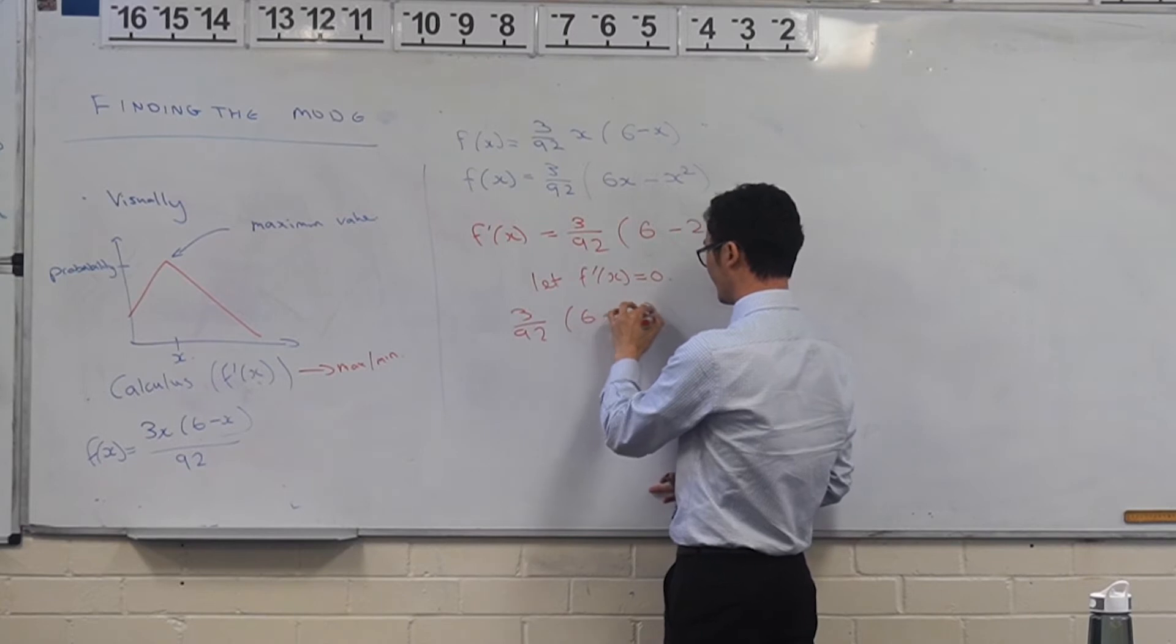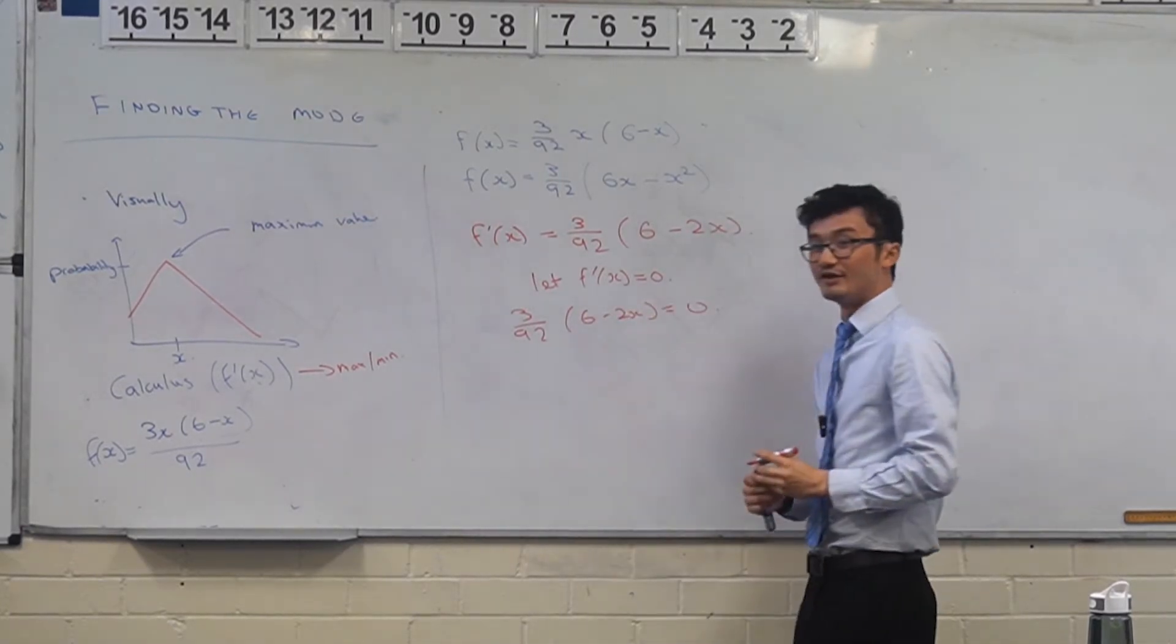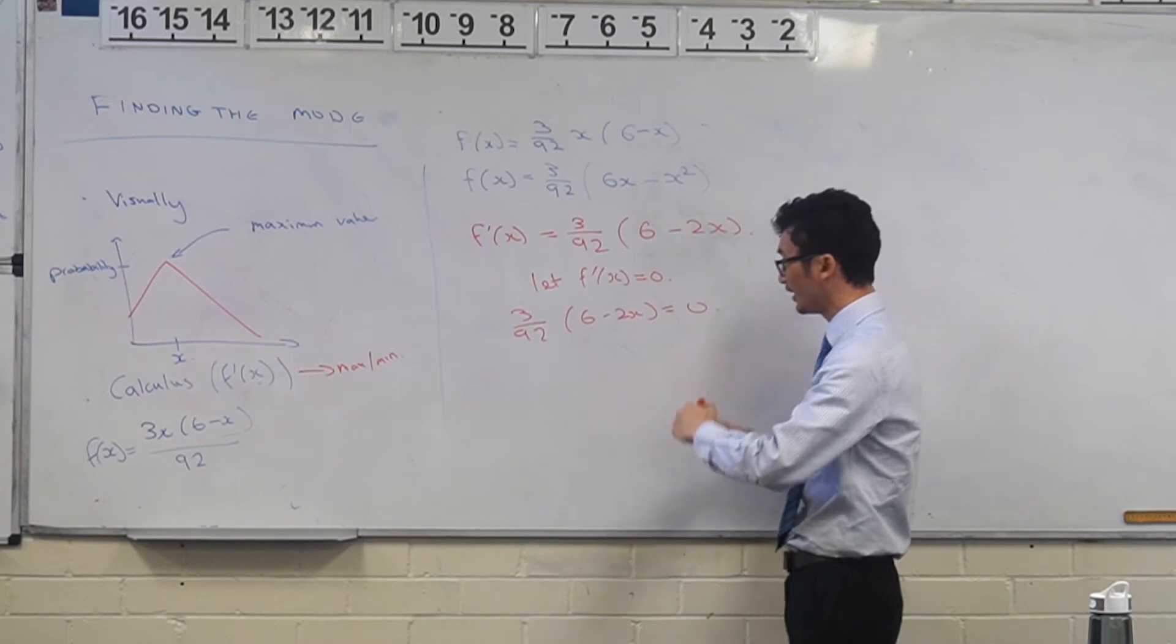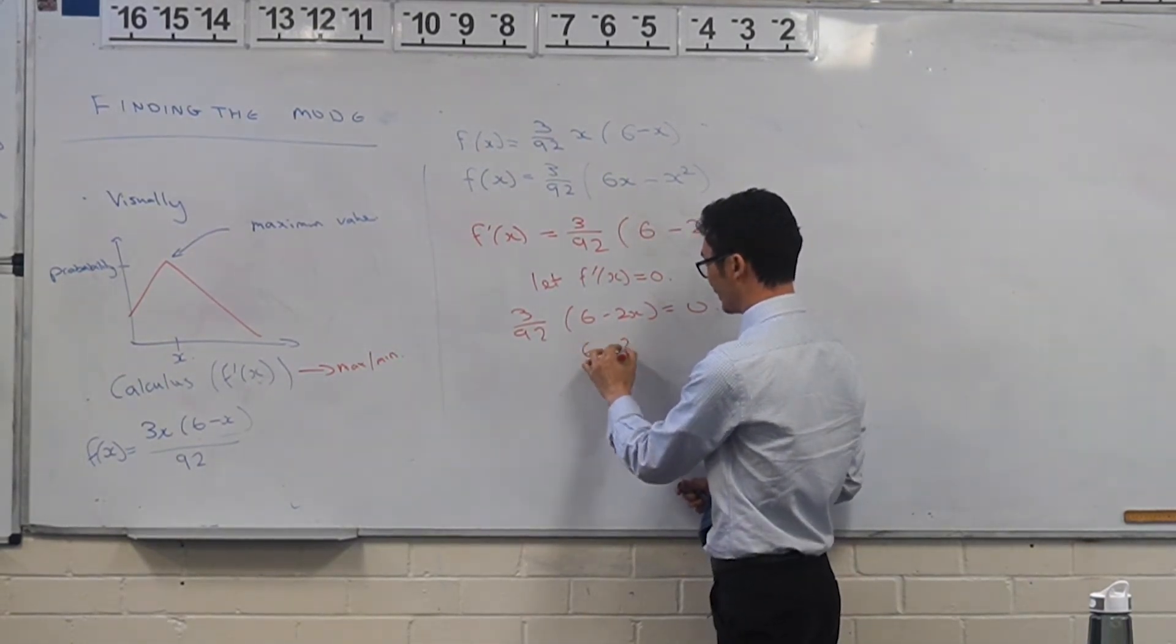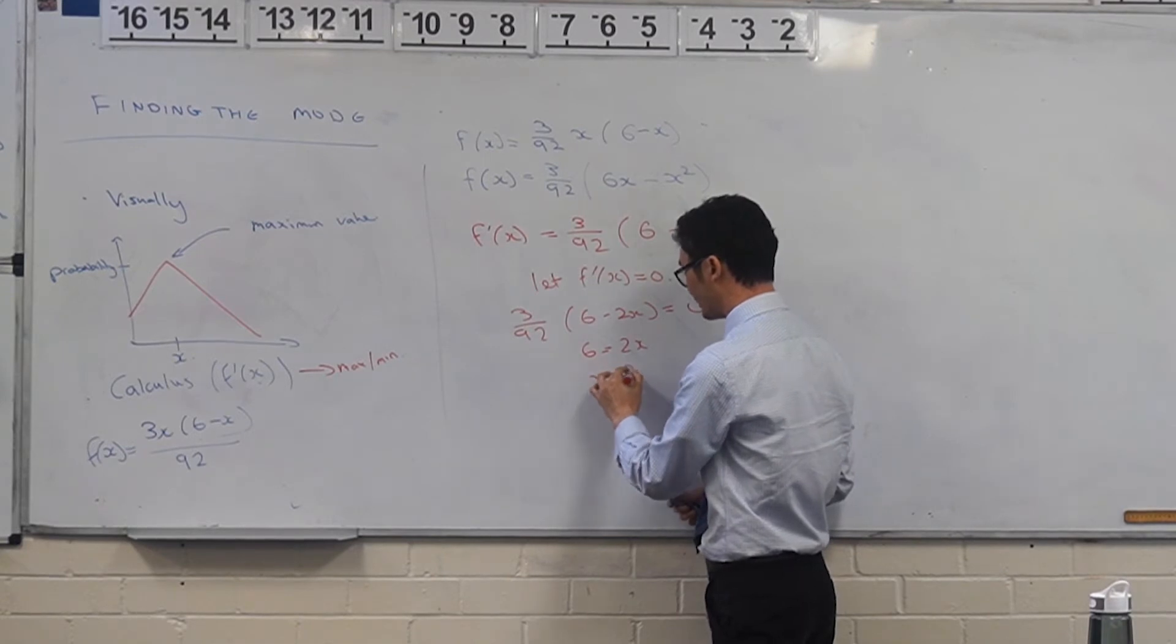And then you have two situations. Obviously this constant here is just going to go away. So you've got 6 minus 2x, or 6 is equal to 2x, x is equal to 3. Now here's the important thing you need to do.